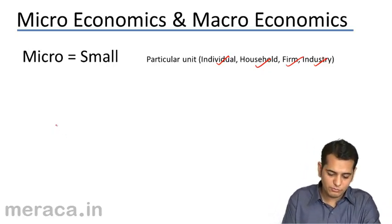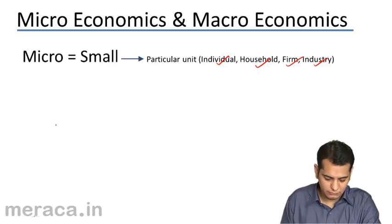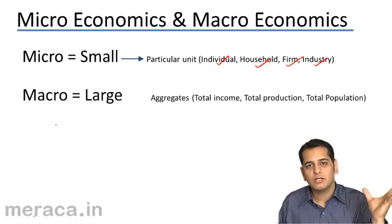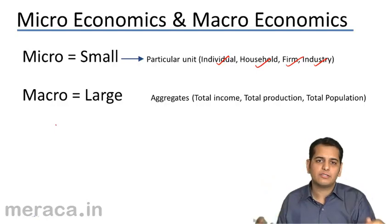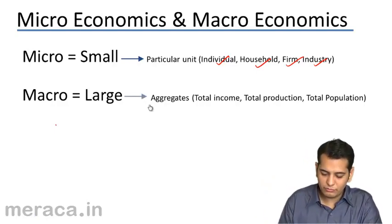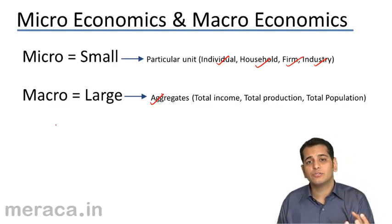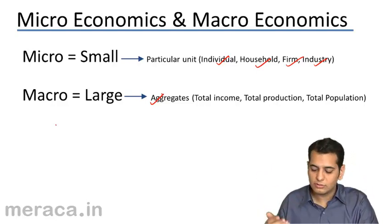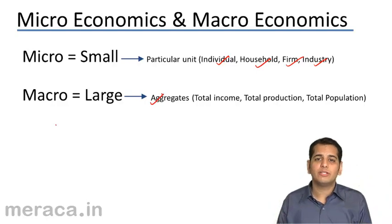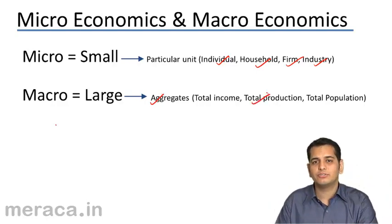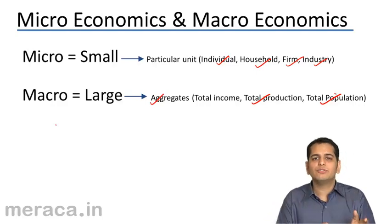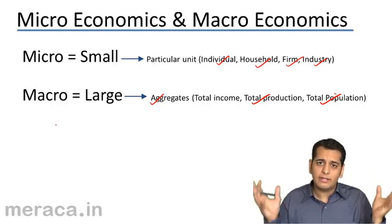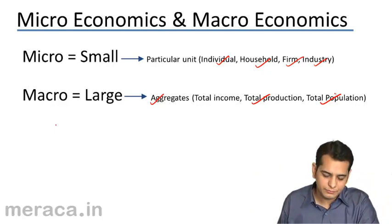Now let's see what macroeconomics is. Macro means large. It is the larger aspect of economics — the aggregative aspect of economics, the economics of aggregates, the economics of sum totals. Sum totals of what? The total income of the nation, the total production of the nation, the total population of the nation. It is the economics of totals, wherein individual units are added and an aggregate is developed from them.